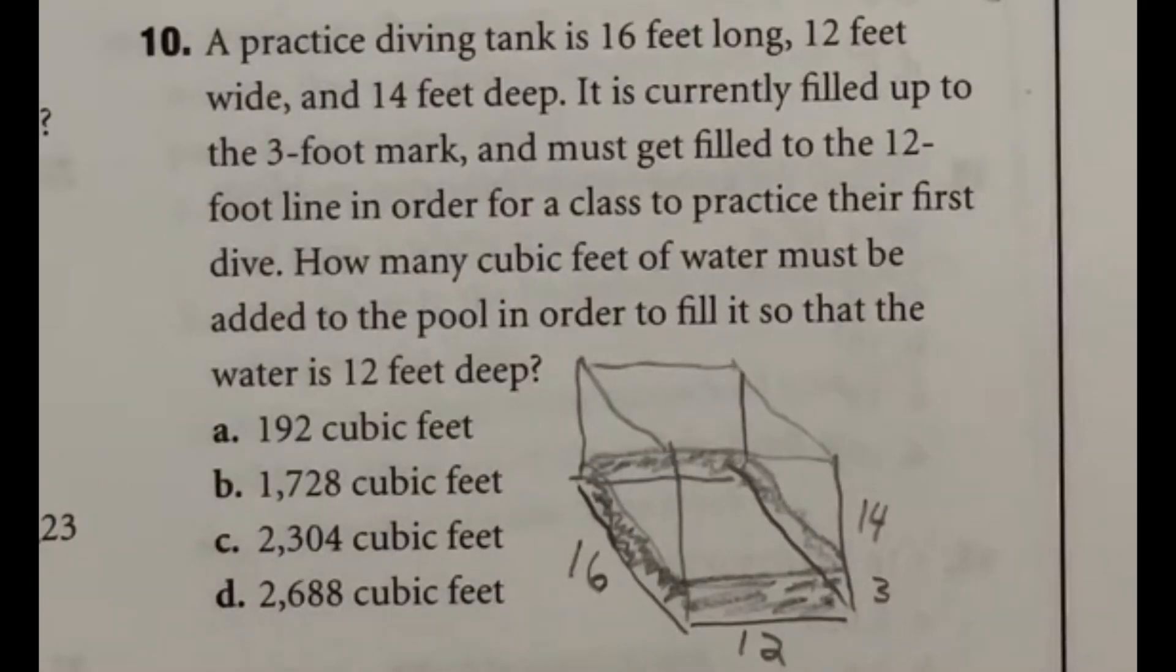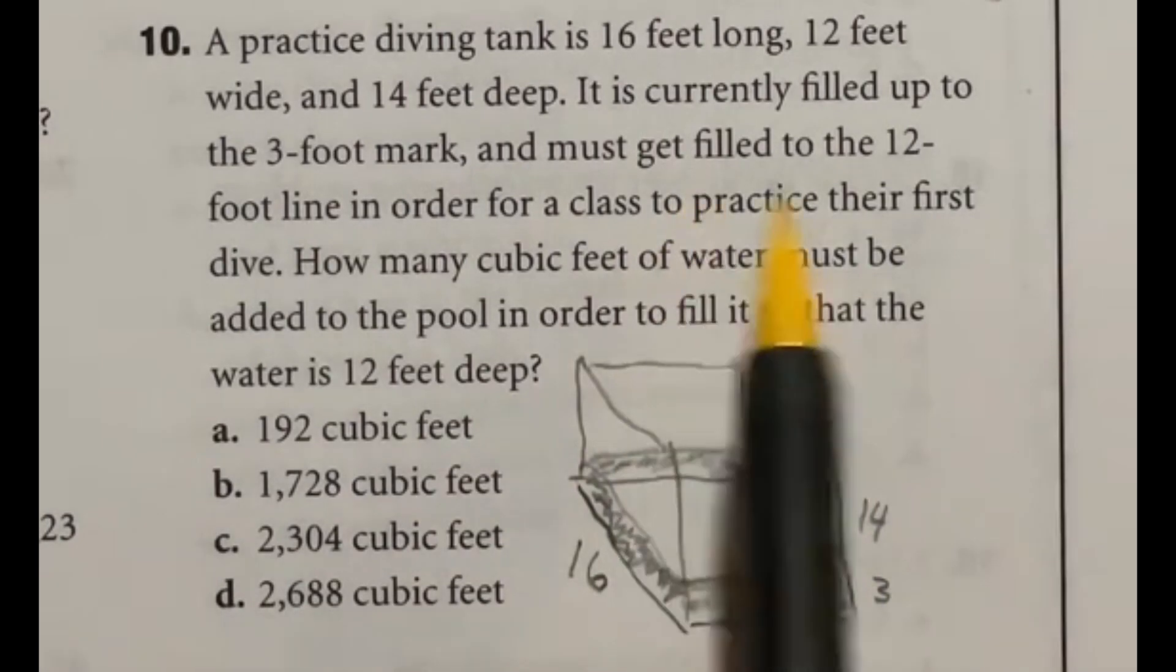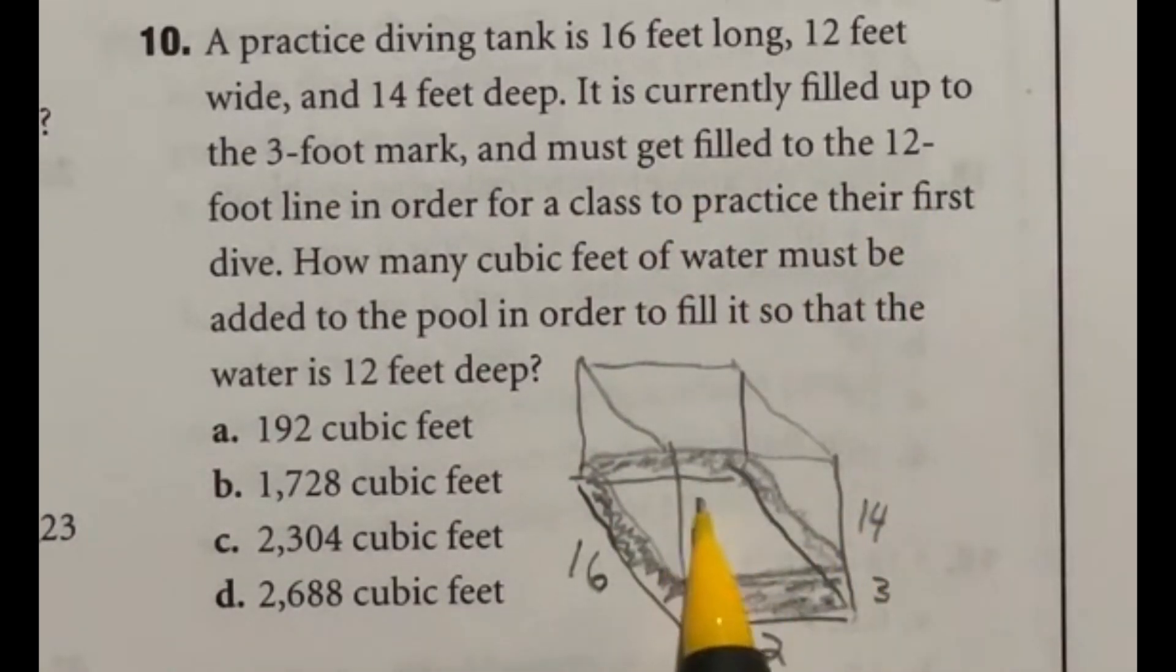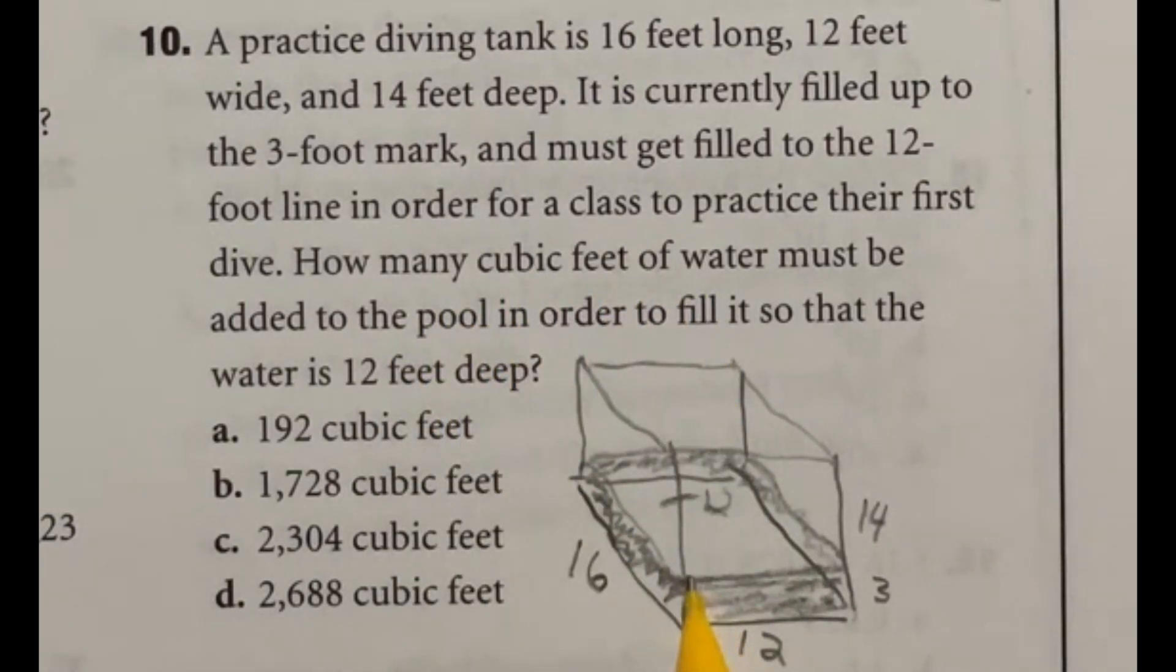So for number ten, I drew a picture here. It says that a practice diving tank is 16 feet long, 12 feet wide, and 14 feet deep. It's currently filled up to the three-foot mark. So you can see I have this filled up with water. Then it says it must go up to the 12-foot mark, which is going to be higher, obviously. And they want to know how much water you would have to add to get it from that three-foot mark up to the 12.